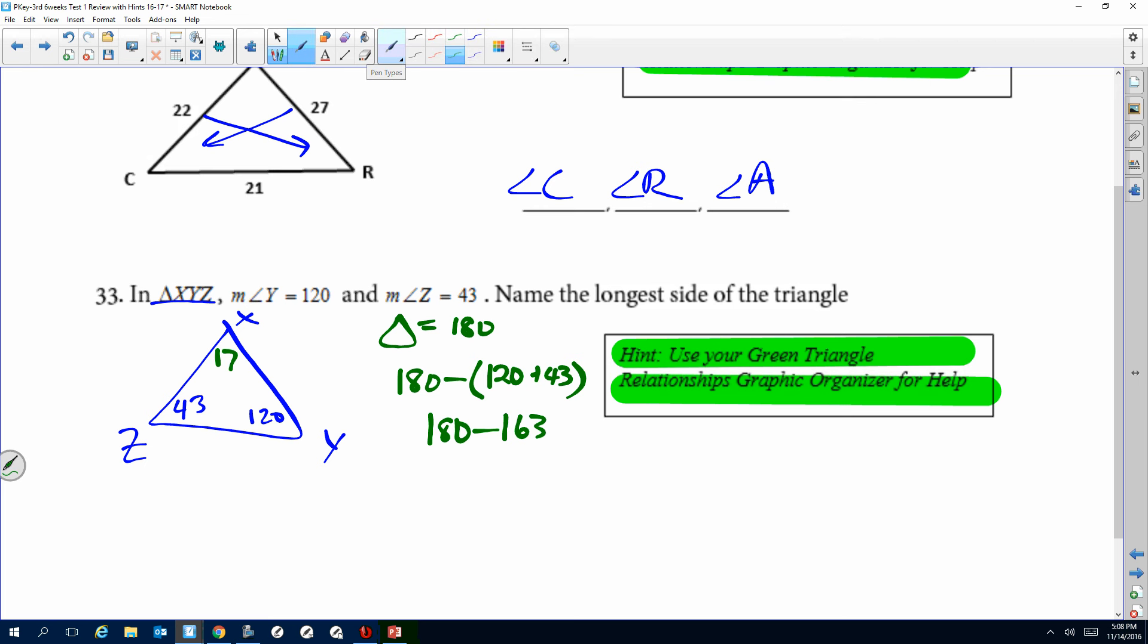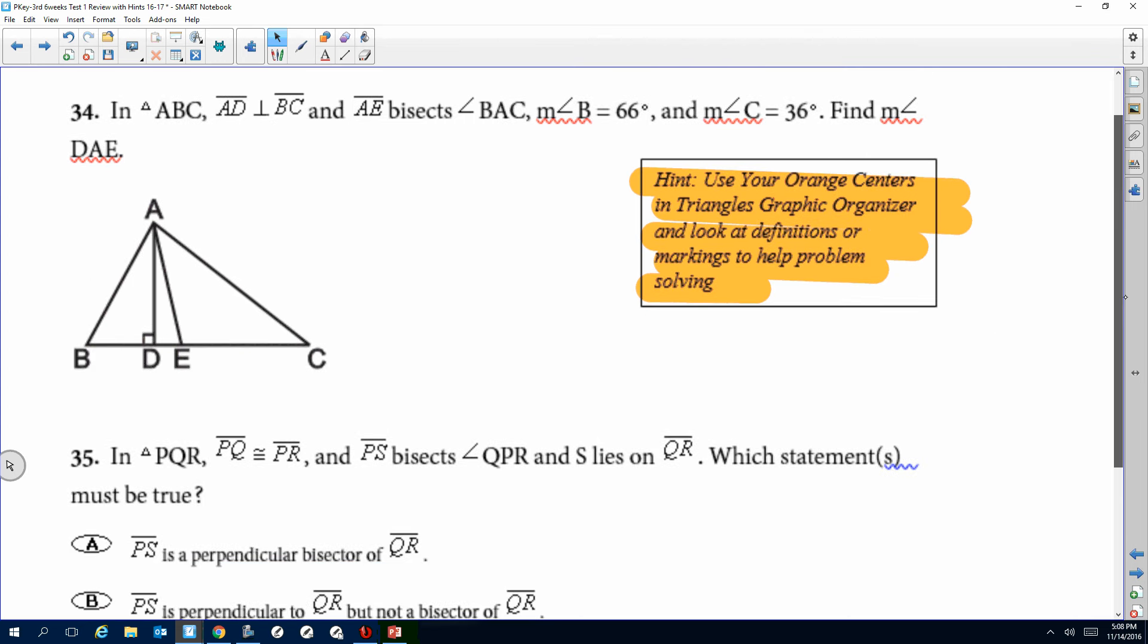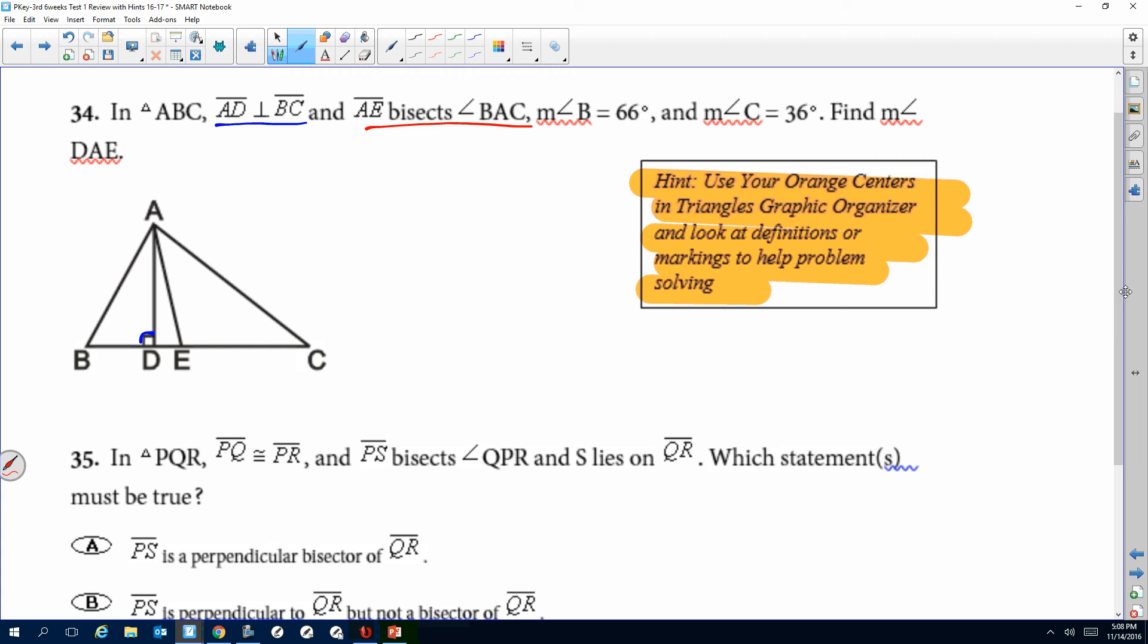When we get here, we're back to the orange graphic organizer. We're just going to mark the given again. AD is perpendicular to BC, they went ahead and did that for us, there's a box. AE bisects BAC, so here's AE, I'm going to put that in red. Bisects BAC, I'll put the arcs there. The measure of angle B is 66, so I'm going to put that over here, 66. And the measure of angle C is 36, which is right there. And they want us to find the measure of DAE. DAE is this middle piece here. So the way we're going to do that is first we're going to find the measure of angle A. How can we get to that measure of angle A? Well we know we have 180 minus our two angles here.